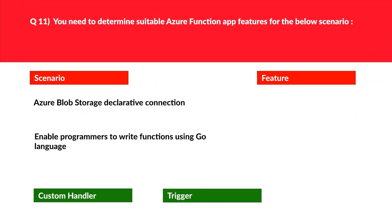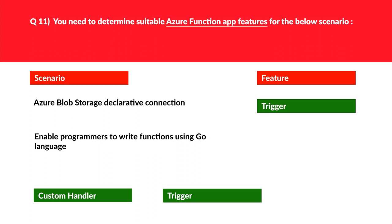This question is about Azure Function App. Let's look at the first statement: Azure Blob Storage declarative connection. Whenever we invoke a function, triggers act like bindings. These bindings provide a declarative way to connect data to code, hence 'trigger' looks good here. We'll move this.